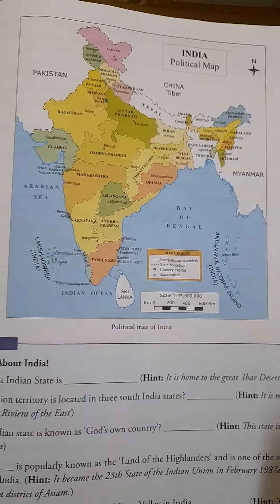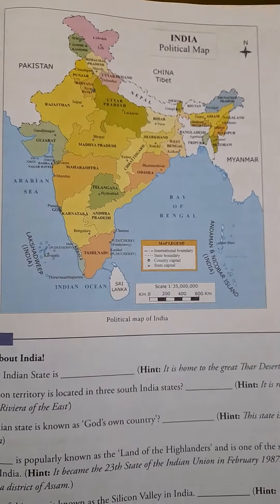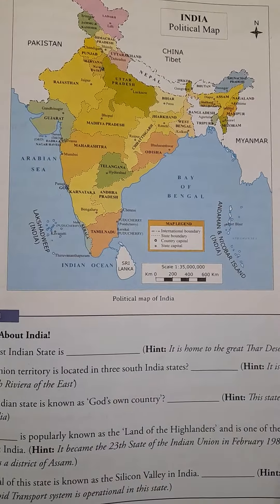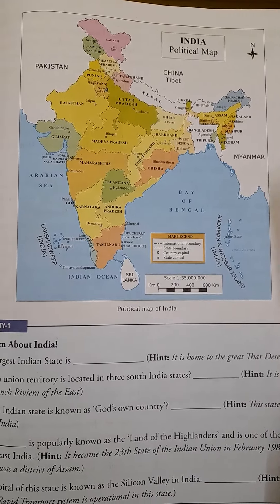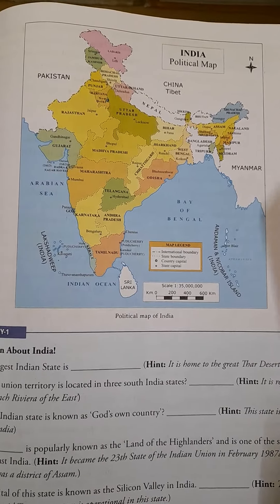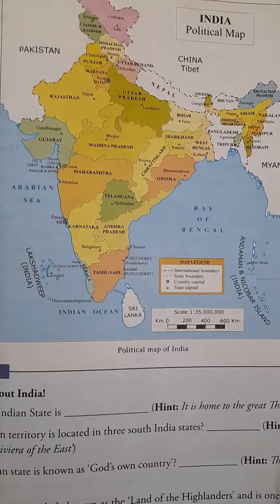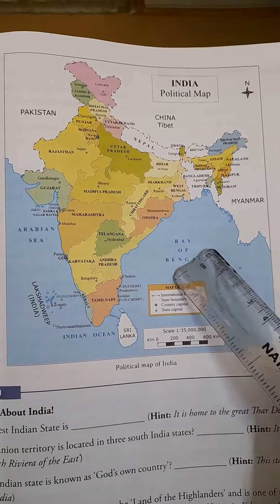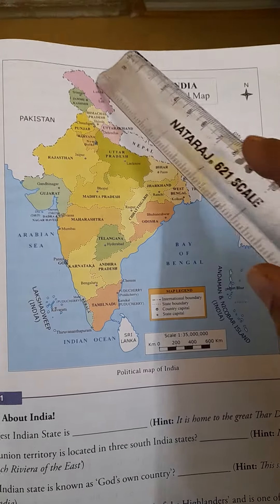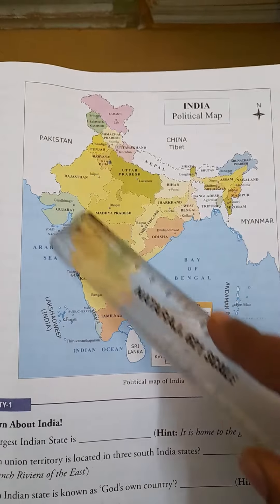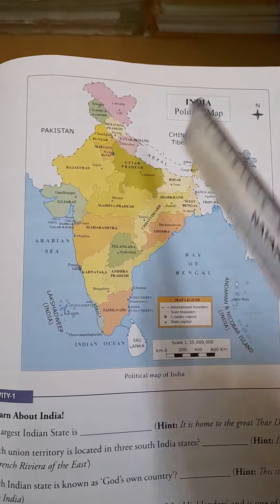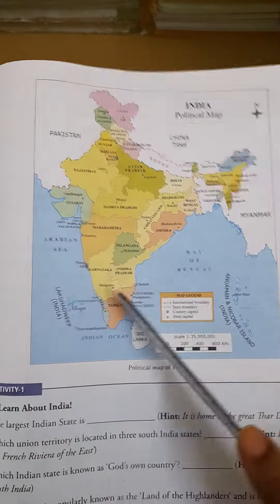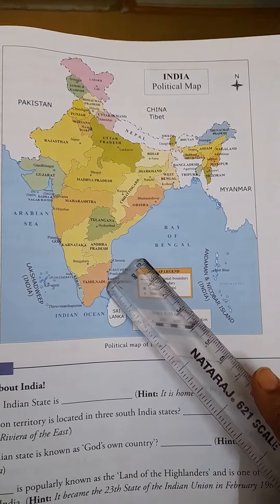Good afternoon children. After finishing all the physical features of India, let's come to the political division. Political division means this whole country India, whose extent — the length and breadth of India's location — we have already covered.